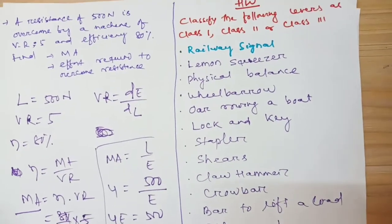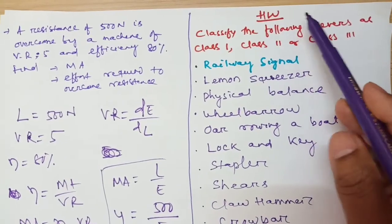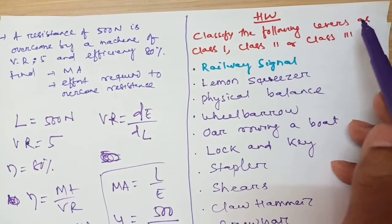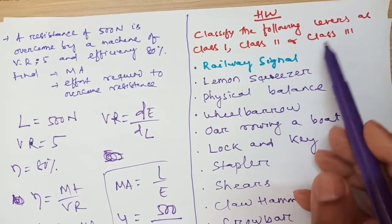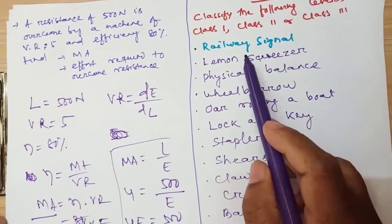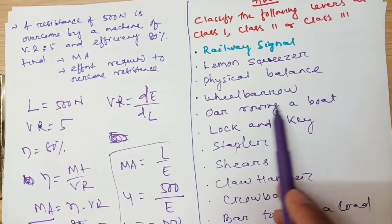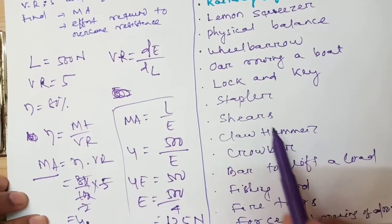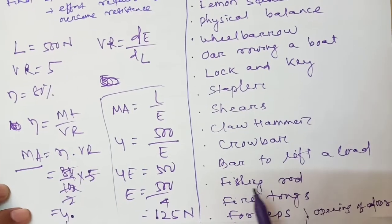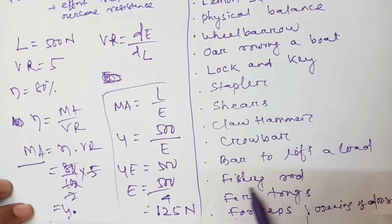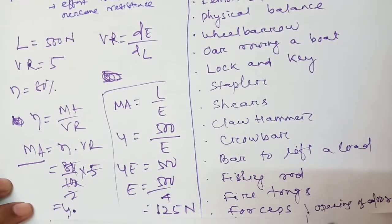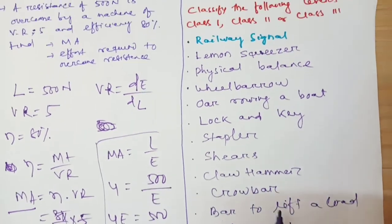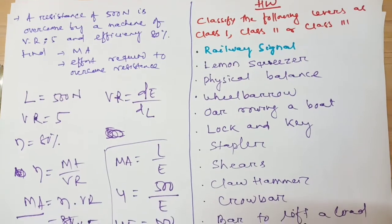Now some homework for you. Classify the following levers as class 1, class 2, or class 3: railway signal, lemon squeezer, physical balance, wheelbarrow, oar rowing a boat, lock and key, stapler, shears, claw hammer, crowbar, bar to lift a load, fishing rod, fire tongs, forceps, opening of a door.